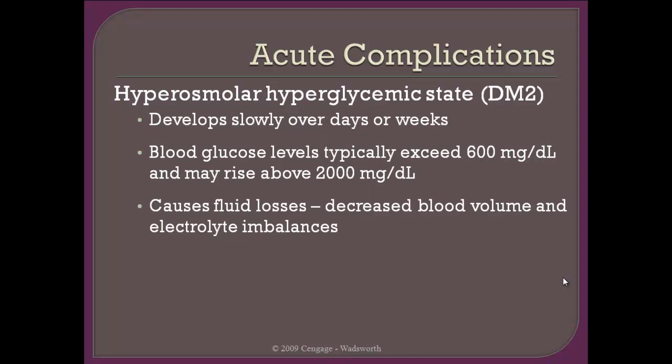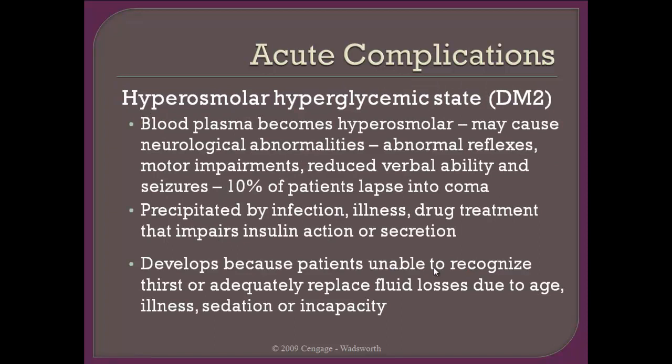Let's move on to hyperosmolar hyperglycemic state. This is seen in type 2 diabetes and can develop very slowly over days or weeks. We see this occurring when blood glucose levels exceed 600 milligrams per deciliter. That's going to cause the same type of fluid loss we saw in ketoacidosis, so you're going to get that same electrolyte imbalance. This can cause neurological abnormalities — the person becomes confused, there can be abnormal reflexes, motor impairment, and 10% of patients will lapse into a coma. That can be caused by infection, illness, or sometimes simply drug treatment that impairs insulin secretion.